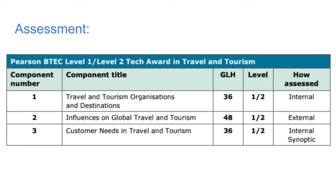Over this two-year course, we will study all three components. We will start in Year 10 with component one, moving on to component two, then into Year 11, finish component two and then move on to component three. Component one and three are internally assessed, meaning the teachers mark the work, give feedback, and students are encouraged to develop it further. Component two is an external assessment — this basically means there is an exam. Students work on the content throughout Year 10 and 11, and the exam will take place in January of Year 11.